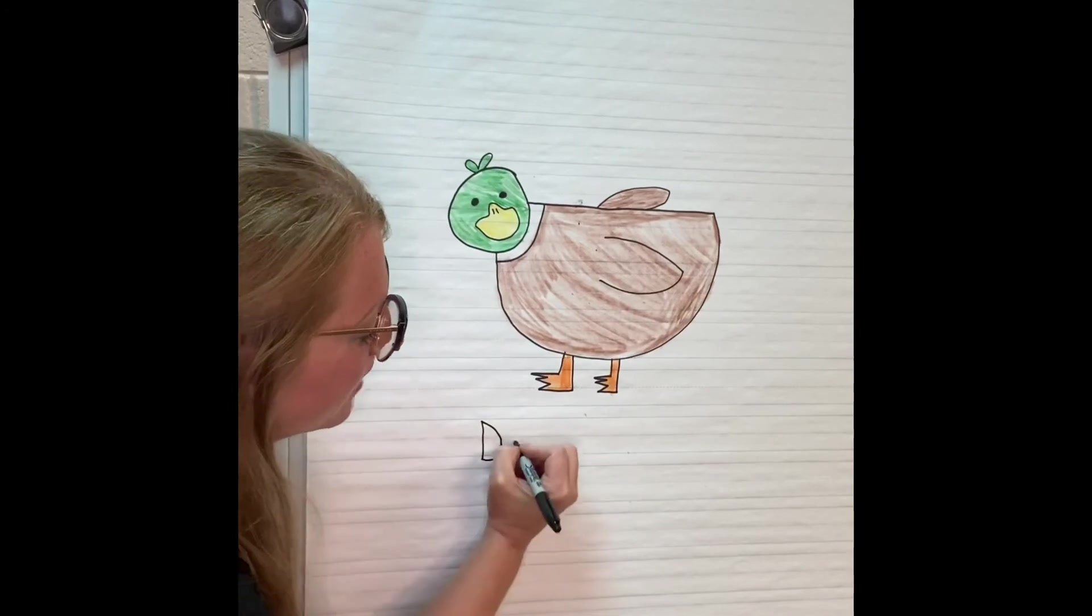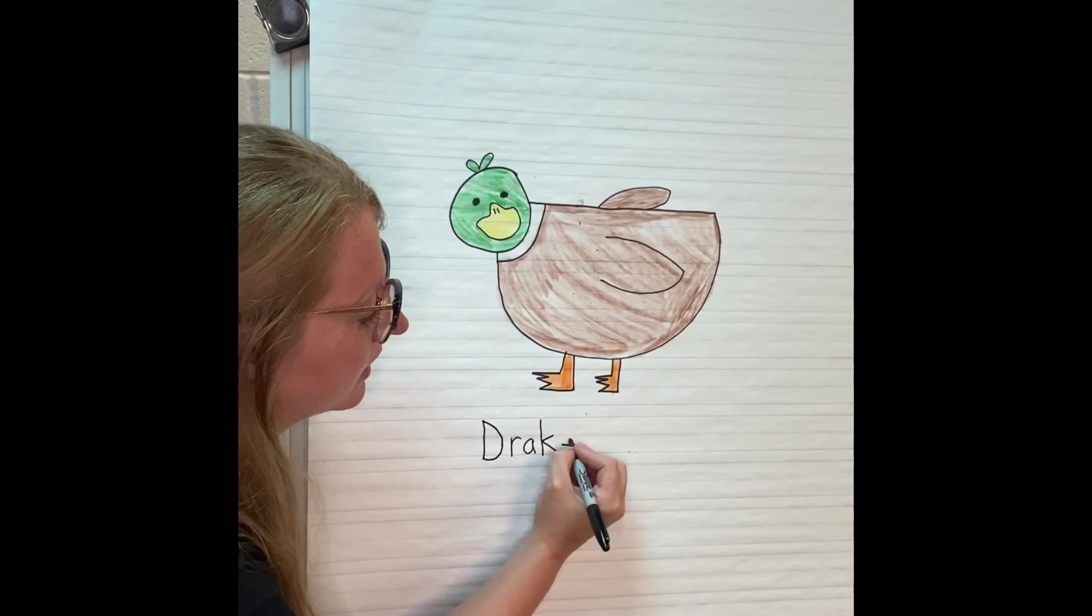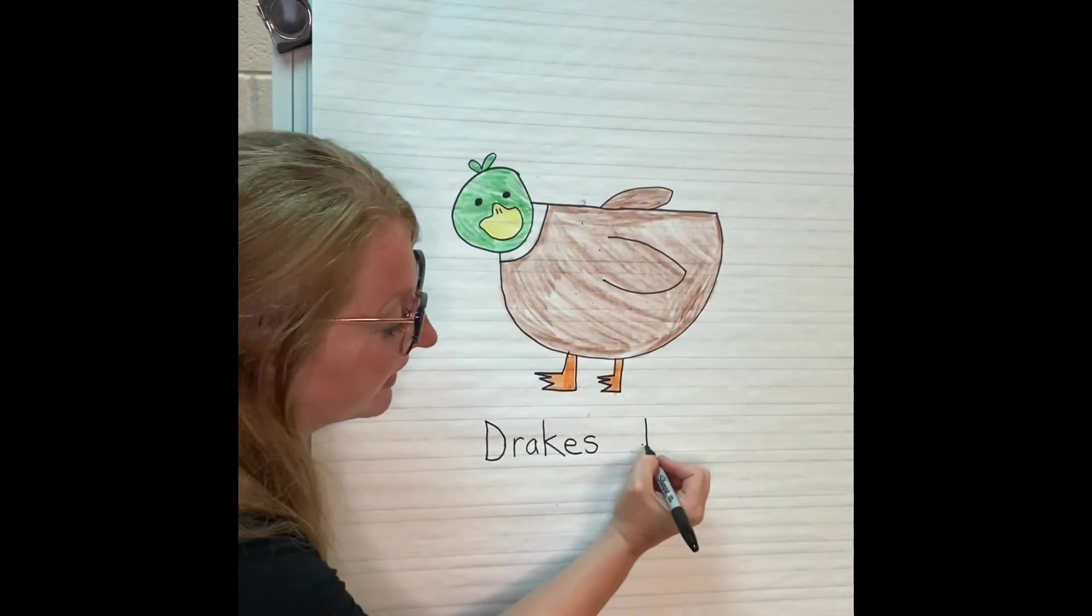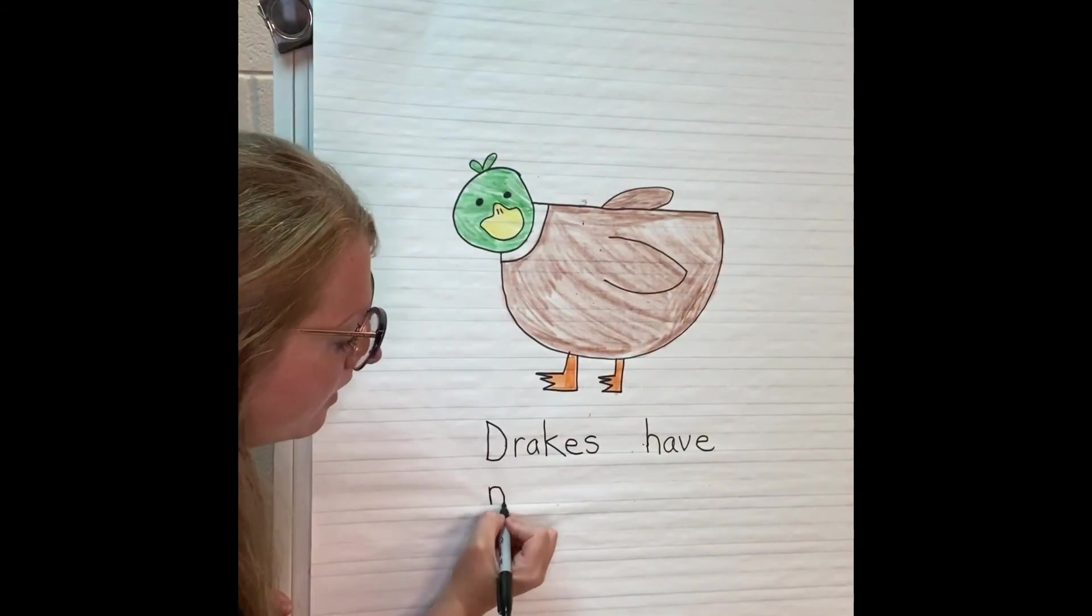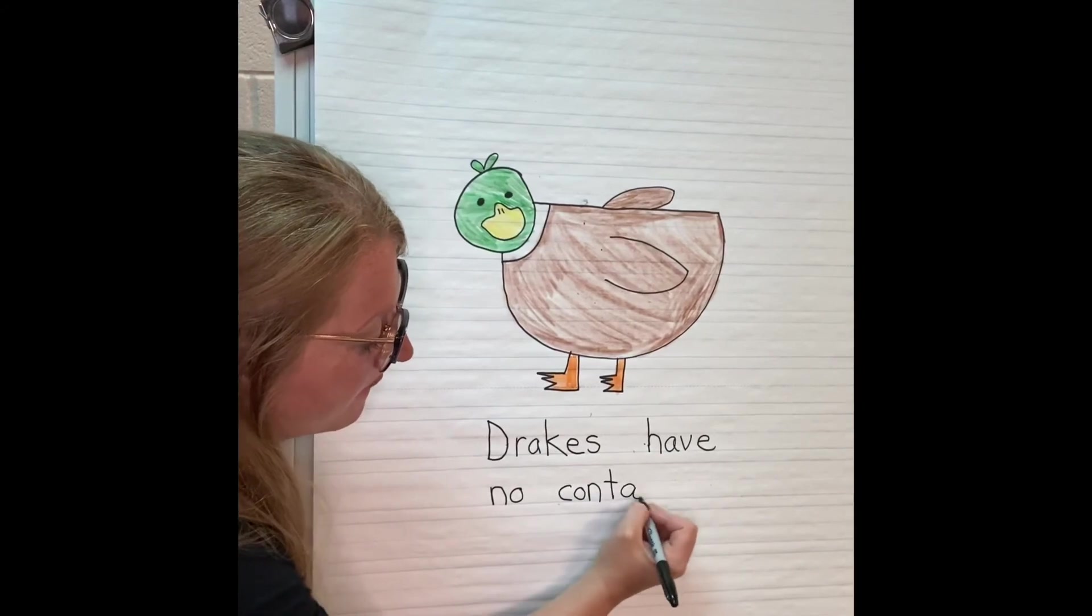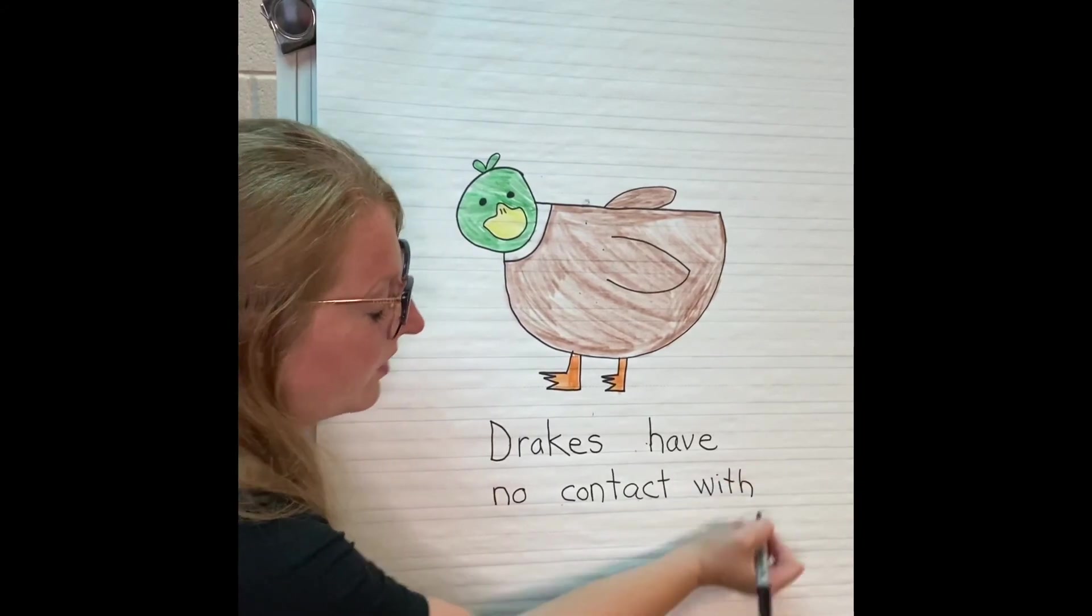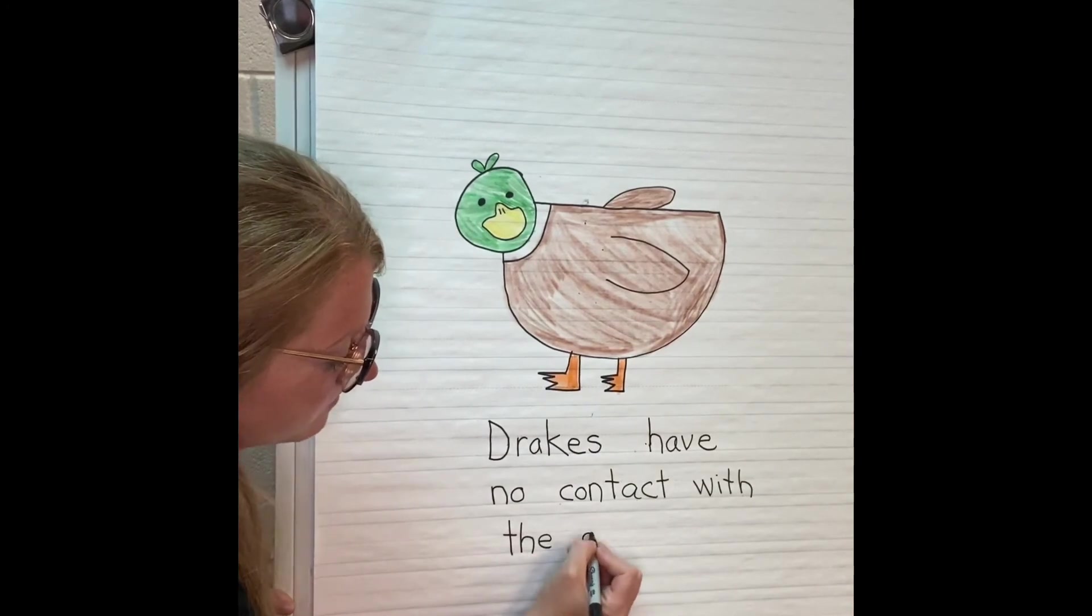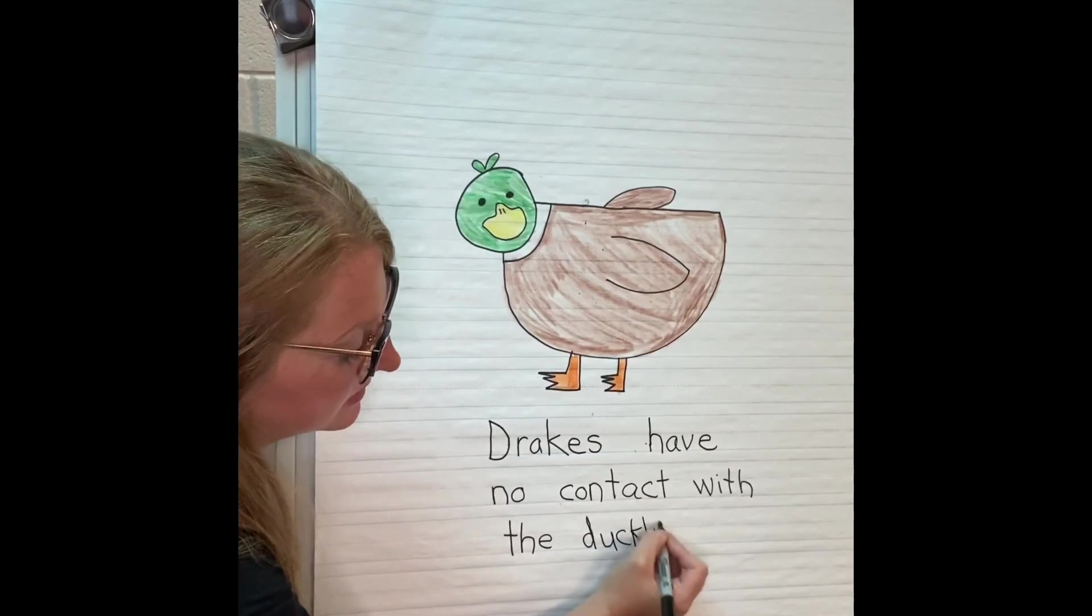Drakes. So drake, I'm going to start with uppercase D. A drake is the name of a male duck. Drake's finger space between, cause we want to make sure we have a gift. Have no contact with the ducklings.